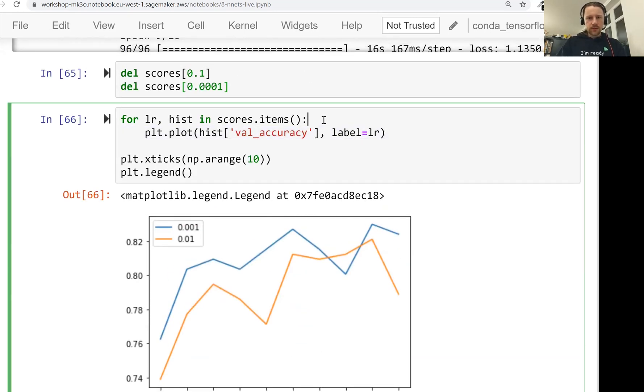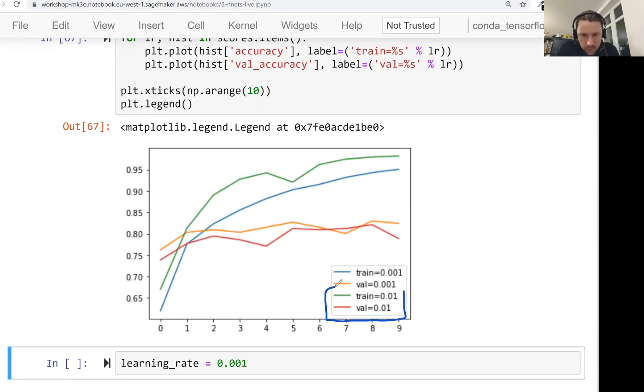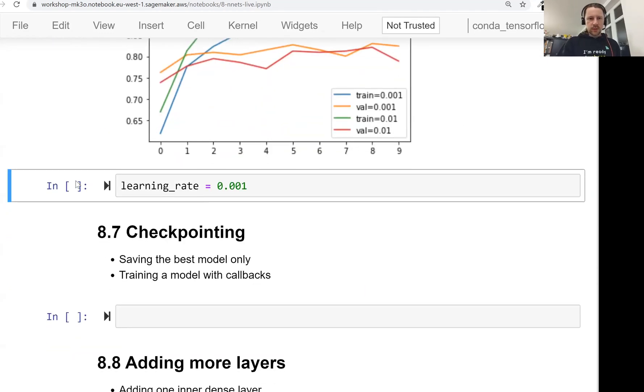And maybe just out of curiosity, we can also look at training data. So I just want them to have different labels. This one, this two. So not only it's worse on validation, it's also better on training. So the gap between these two and these two is bigger. I think that's another argument in favor of actually going with this learning rate. Yeah. So this is how we select the learning rate.